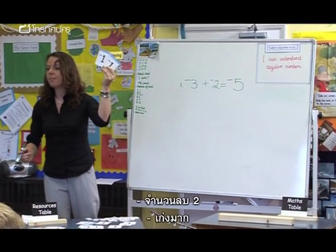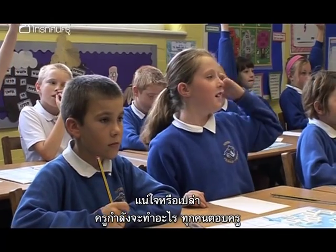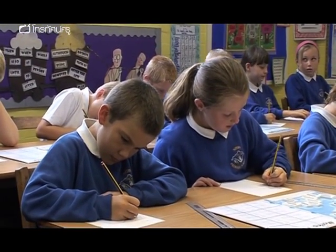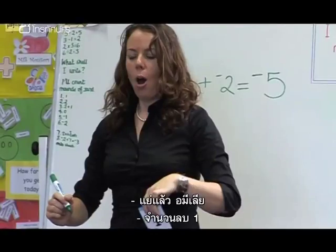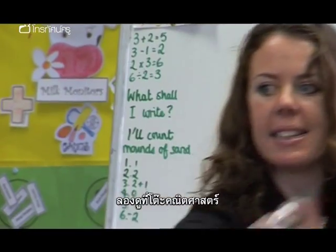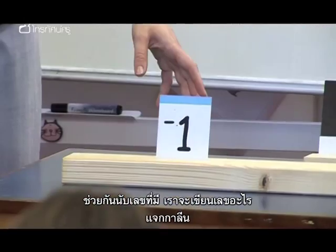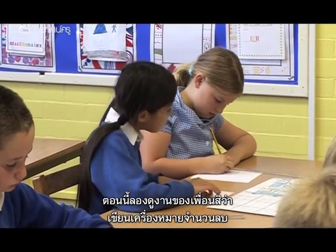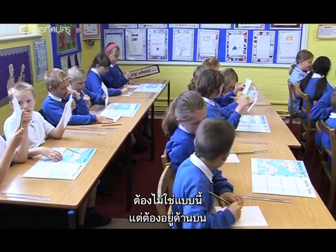What will you write seeing this? Everyone tell me. Negative two. Fantastic. What am I going to write next? Are you sure? What am I doing? Everyone tell me. Take away. Fantastic. Take away. What would I write now? Negative one. Well done. So look at the maths table and count. What have we got? What will you write? Negative one. Well done. This time when you look at your partner's work, I want you to look and see if they've put the negative symbol in the right place on the number. It shouldn't be where this one is — it should be right at the top.